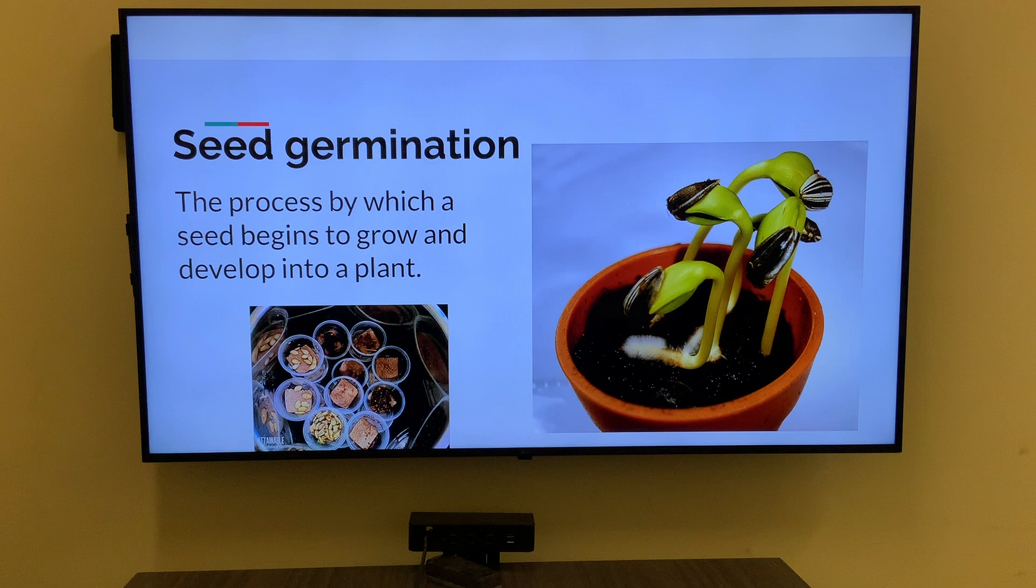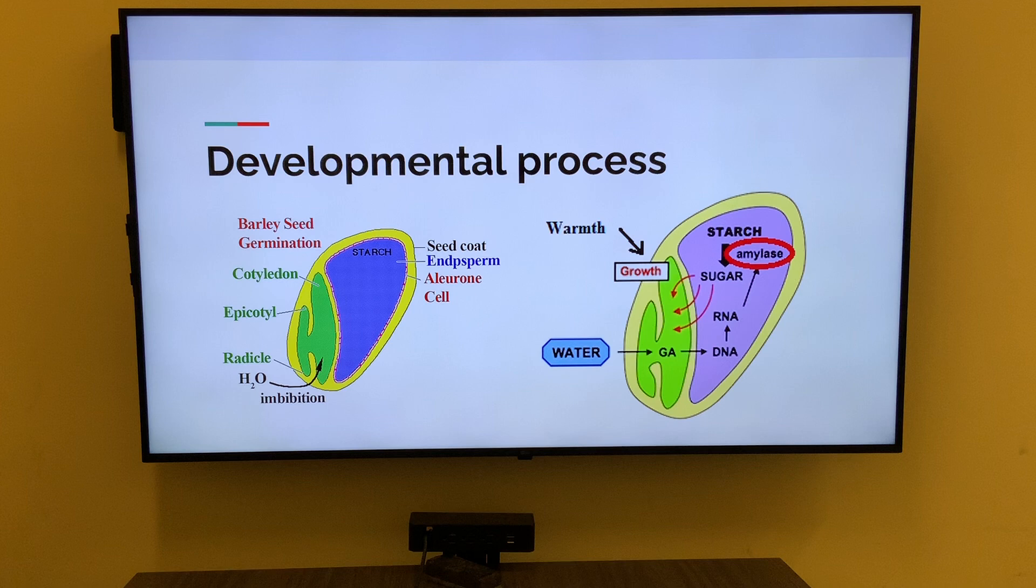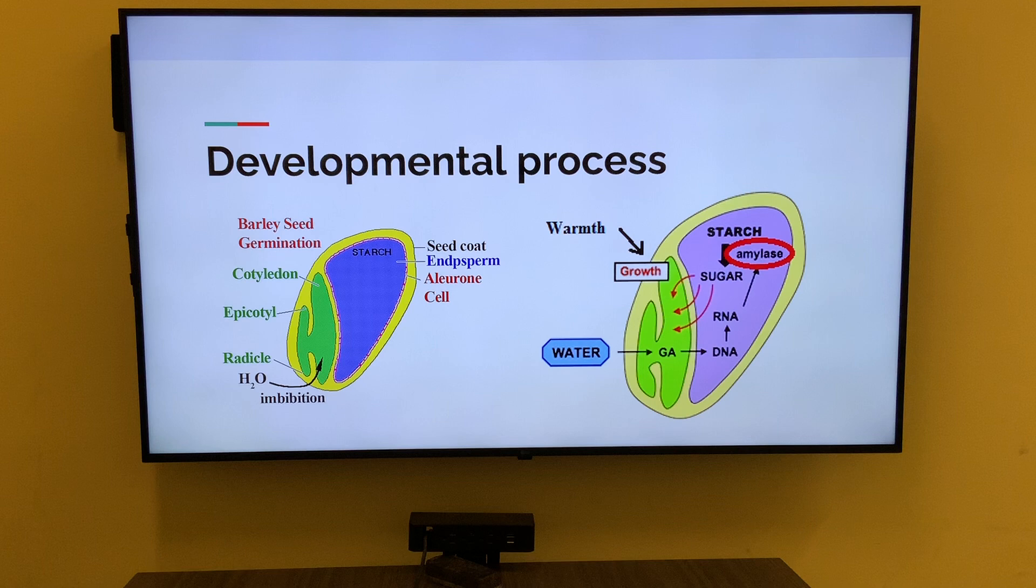There are several steps in the developmental process. The first is imbibition. This is the initial stage where water is absorbed by the seed coat causing it to swell and soften. As a result, the seed becomes more permeable to gases and other substances necessary for germination.